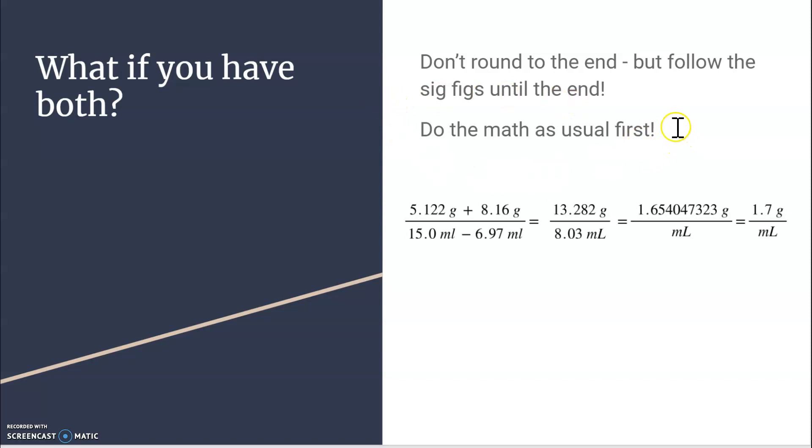So let's look at the math involved. First, we're going to do the math as usual, and then we're not going to round to the very end. So don't round and then round and then round. That can skew your answer. But we're going to follow the sig figs as if we rounded as we went. So first thing, we're going to do the math as usual. So here's the math problem. The first part I did was do the addition on the top and the subtraction on the bottom, and then the division.